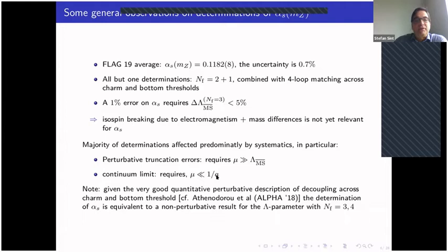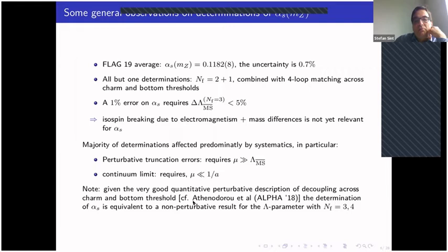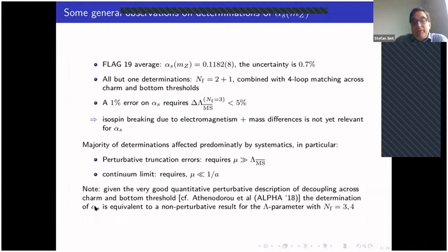Perturbative decoupling across charm and bottom thresholds is used in perturbation theory, but there is a nice test by Atidodoro et al. in 2018 where they tested perturbative decoupling across bottom and charm versus non-perturbative decoupling, and the perturbative description is quantitatively very accurate. With that knowledge, it is enough to get a result for alpha_s in the five-flavor theory by just determining the lambda parameter in three or four flavors.